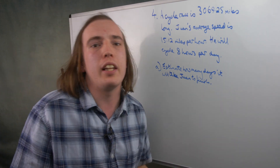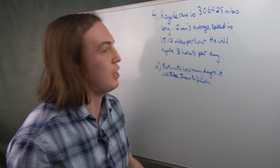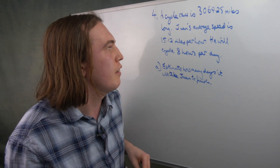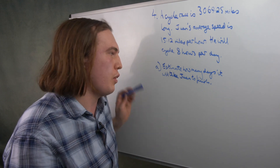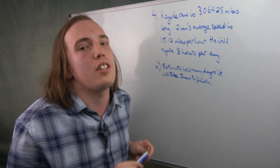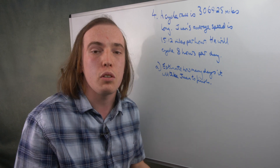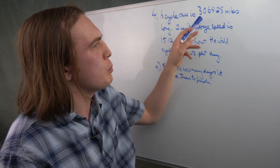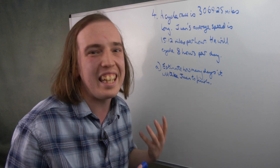Given that this is a non-calculator paper, you may be worried if you see numbers with decimals. But don't worry — we'll get to why this is OK. The cycle race is 3,069.25 miles in length, and Juan's average speed is 15.12 miles per hour. He'll be cycling for eight hours per day. For the first part of the question: estimate how many days it will take him to finish the race. The key word here is 'estimate' — we do not need an exact answer, but it still needs to be close. Don't worry about working out with 0.25 or 0.12.